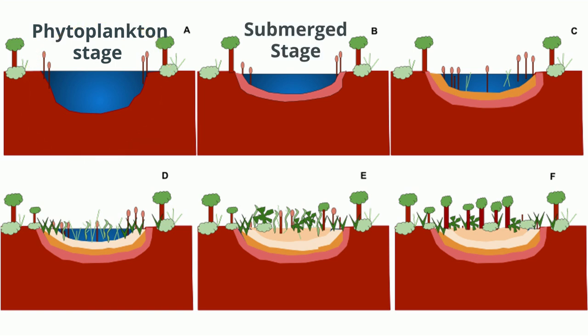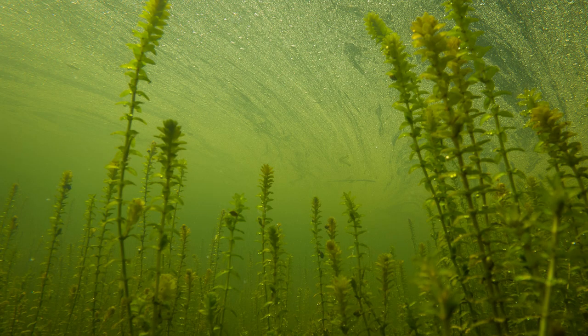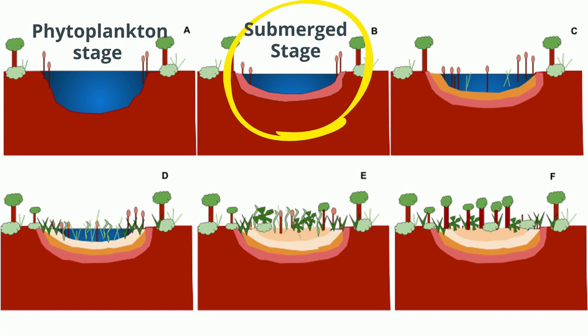The Submerged Stage. As the water body becomes more shallow, more submerged rooted species are able to become established due to increasing light penetration in the shallow water. This is suitable for growth of rooted, submerged species such as Elodea. These plants root themselves in the mud and the pond becomes even more shallow during this stage.